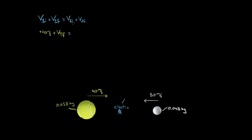That should equal the initial velocity of the second object, our golf ball. The initial velocity of the golf ball is not 50, it's negative 50. You've got to be careful — these are velocities in this formula, so if you've got a velocity directed in the negative direction, you better make it negative. So the initial velocity of the golf ball is negative 50 meters per second, because leftward is negative and rightward is positive, plus the final velocity of the golf ball, which I'll call vg final.